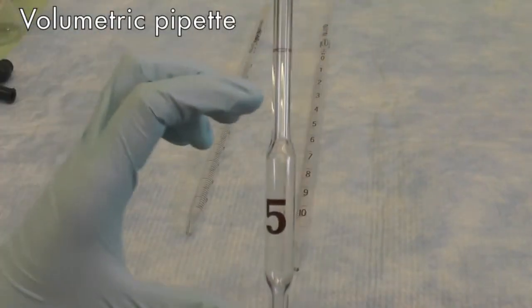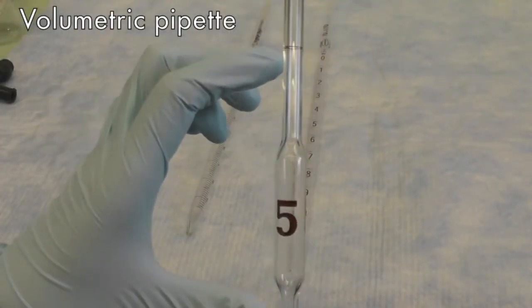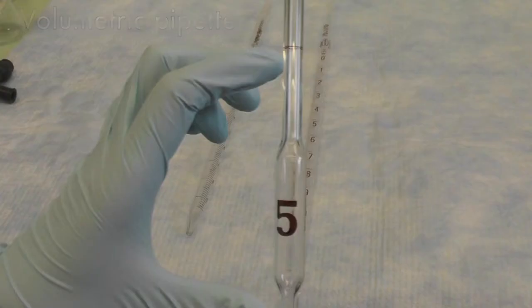Volumetric pipette comes with a distinct shape and it only delivers one fixed volume. It does not require the last drop of liquid to be blown out for accurate volume delivery.